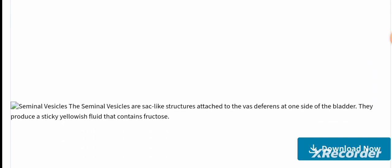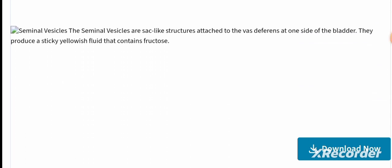The seminal vesicles are sac-like structures attached to the vas deferens at one side of the bladder. They produce a sticky, yellowish fluid that contains fructose.